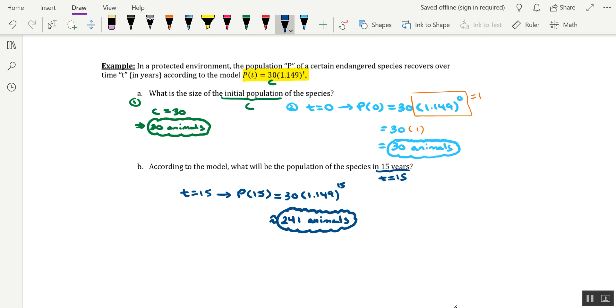All right, so in just the span of 15 years, we go from 30 to 241 animals, which I guess, all things considered, would be a good thing for a recovering endangered species.